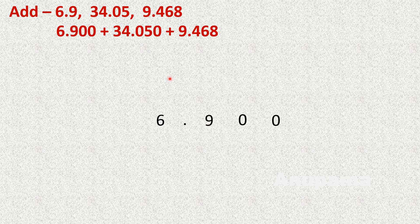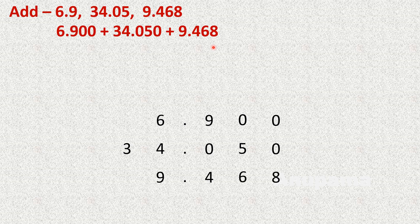We know that 4 is at the ones place, so we write it under 6. So we write 6.900, then 34.050 — with 4 under 6 and 3 in the tens column — then 9.468. Now we need to add, so we write the sign of addition: 0 plus 0 plus 8 equals 8.